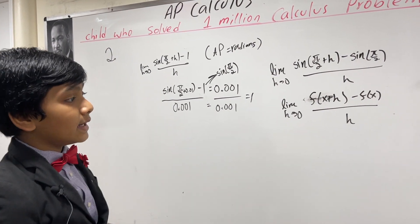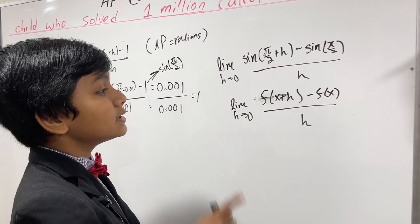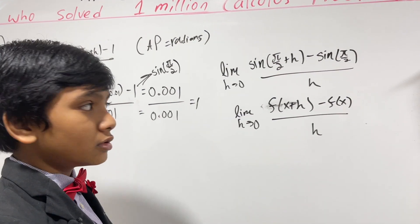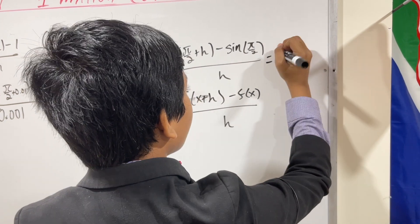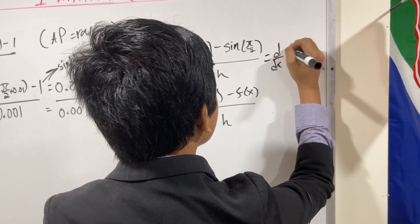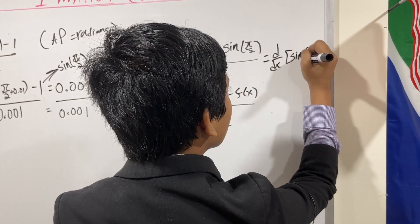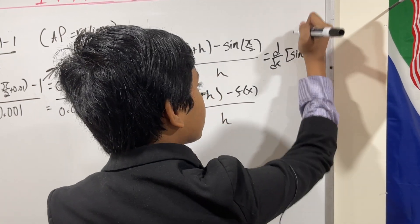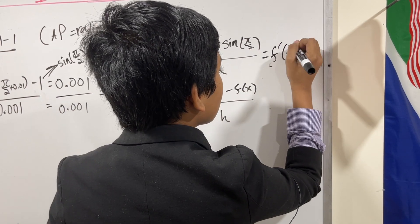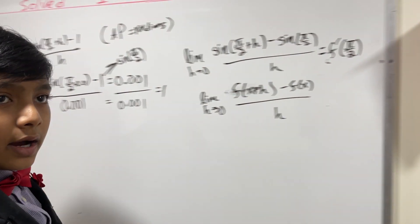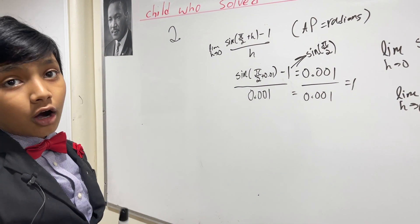And in this case, f of x is sine of pi over 2. So this is simply the derivative of sine pi over 2. Or rather, it's the derivative of sine x with x equals pi over 2.